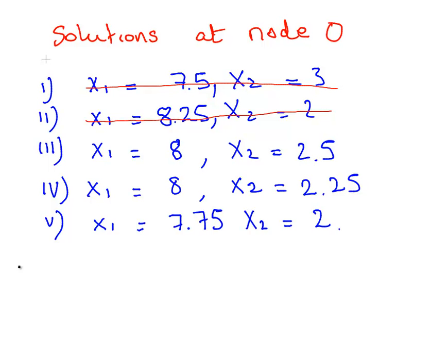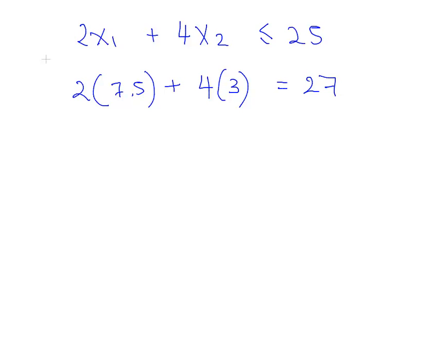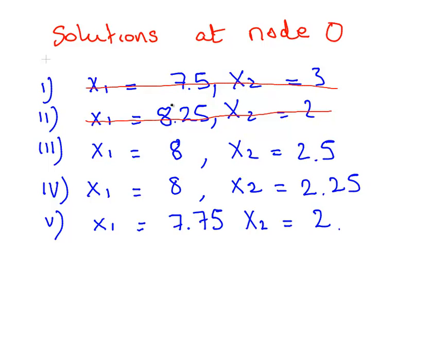What about this one here, 8 and, the third one, 8 and 2.5. That is 2 times 8 plus 4 times 2.5. That's equal to 26. That can be ruled out for the exact same reason.